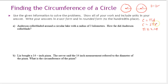Formulas are great because they tell you exactly how to solve the problem, but what's important is knowing what values to put into the formula. If you're finding the circumference and you're given the diameter, you need to put the diameter in the formula. If you're given the radius, you put the radius in the formula. Be sure you know whether you've been given the radius or the diameter.